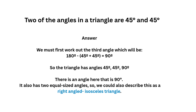For this triangle, two of the angles are 45 degrees and 45 degrees. We already know it's going to be an isosceles triangle because two angles are the same size. Let's complete the calculation: 45 plus 45 equals 90, and 180 minus 90 equals 90. So the three angles are 45 degrees, 45 degrees, and 90 degrees. Since 90 degrees is a right angle, we have a right angle and two equal angles — so we can describe this as a right angled isosceles triangle.